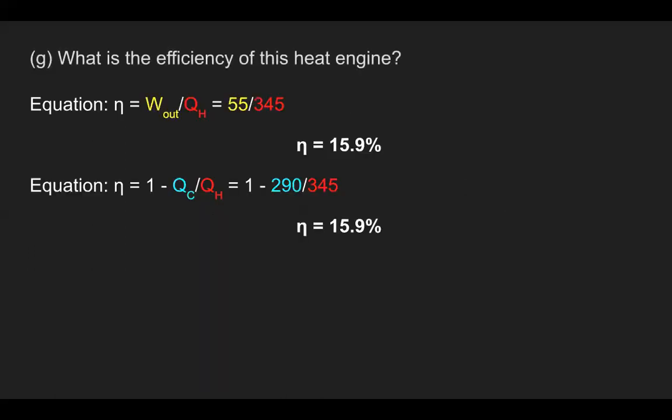To find the efficiency of the heat engine, we use η = W_out / Q_H = 55 / 345, giving 15.9%. This can be verified with the alternate equation η = 1 − Q_C / Q_H = 1 − 290/345, which also gives 15.9%.